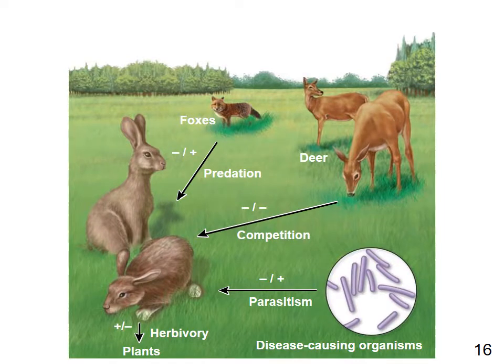A community diagram illustrates how predation, competition, parasitism, and herbivory all play roles together: the fox eats the rabbit — predation; the rabbit eats the grass — herbivory; the deer and rabbit both eat grass — competition; a parasite infects the rabbit — parasitism.